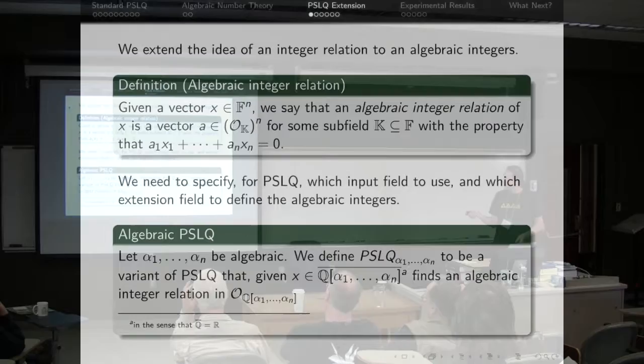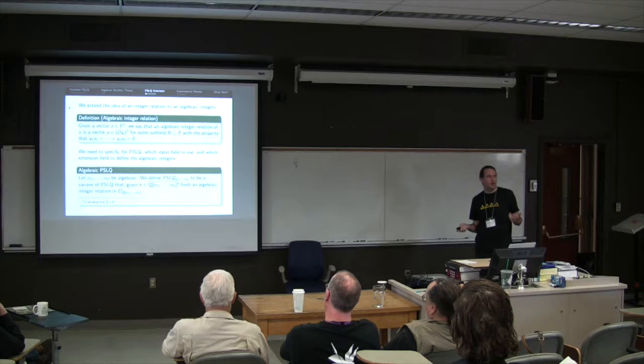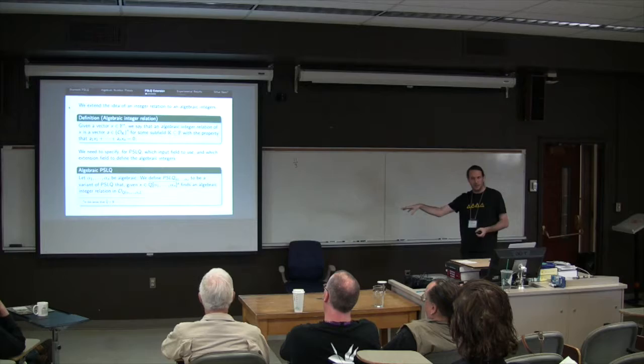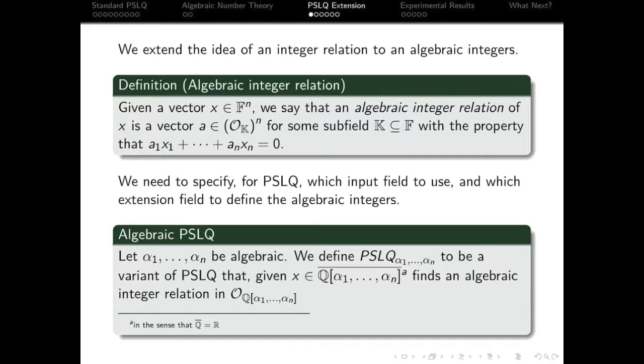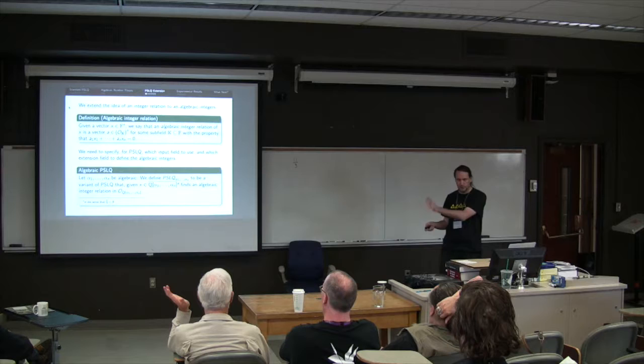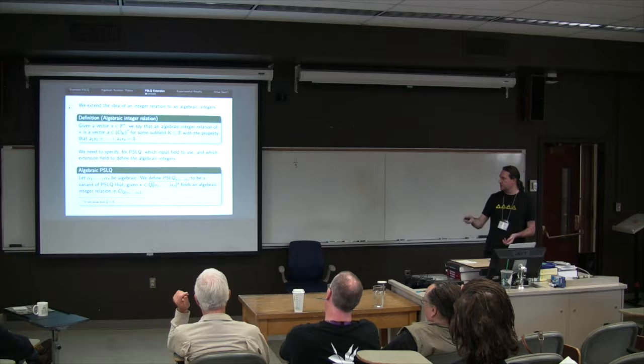Now for the purposes of PSLQ, however, we need to actually specify what input field we're using, what algebraic integer field are we using. So to this end, I've got this definition. So we've got some algebraic numbers. I'm going to define PSLQ subscript to those algebraic numbers. This has been the variant of PSLQ that takes as an input a vector in the closure of Q adjoin these algebraics. This is closure in the same sense as the closure of Q as the reals. And we find an algebraic integer relation in the integer ring of that extension field Q adjoin the alphas.